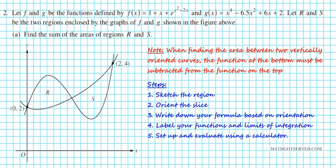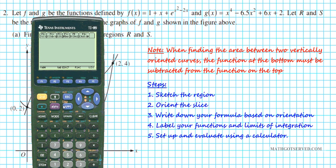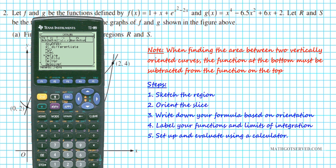Let me show you how to enter these functions into the calculator. We have two functions and we don't have time to enter them over and over again, so we're going to define them. First, let's define function f. Go to catalog and look for define, scroll down until you get to define. We're going to define f of x as 1 plus x plus e to the x squared minus 2x. Press enter.